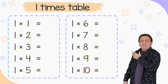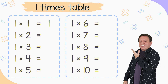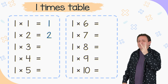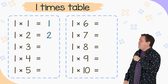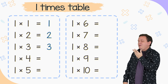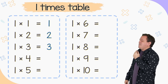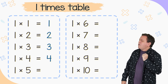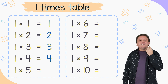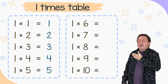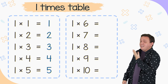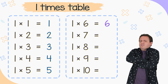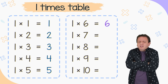1 times 1 equals 1. And 1 times 2 equals 2. 1 times 3 equals 3. And 1 times 4 equals 4. 1 times 5 equals 5. And 1 times 6 equals 6. This multiplication table is really easy, isn't it?